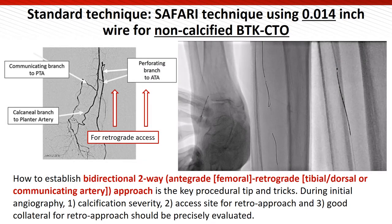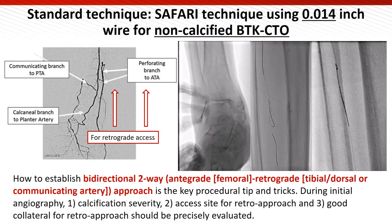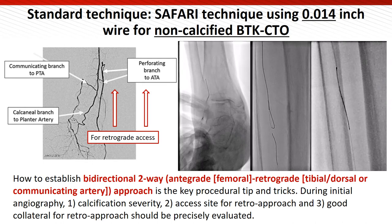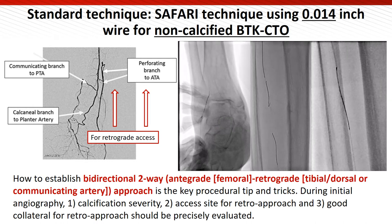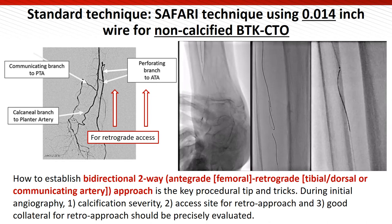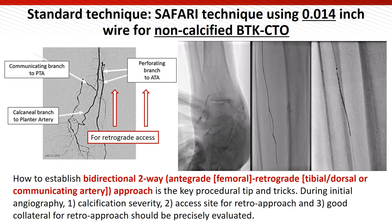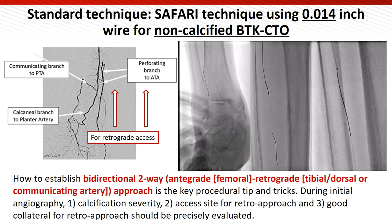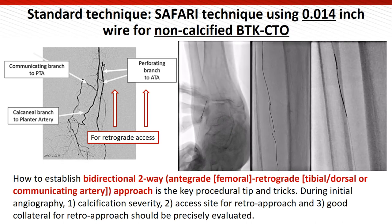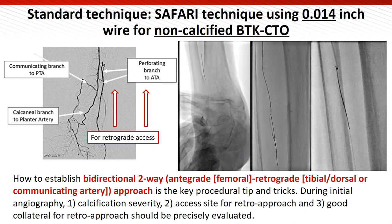A standard BTK technique for CTO revascularization is the SAFARI technique, which stands for sub-intimal arterial flossing with antegrade-retrograde intervention. To achieve successful wire crossing, how to establish a bidirectional two-way approach is the key procedural tip. During initial angiography, calcification severity, access site for retrograde approach, and good collaterals for retrograde approach should be precisely evaluated.